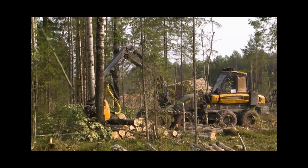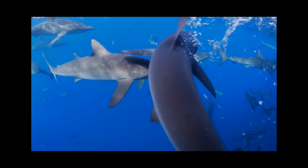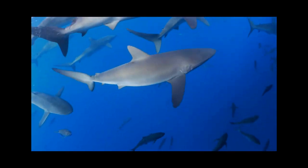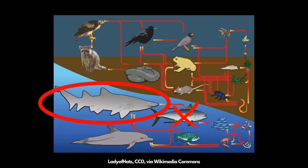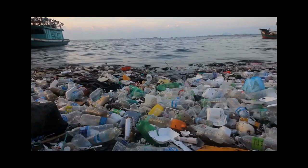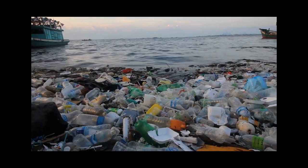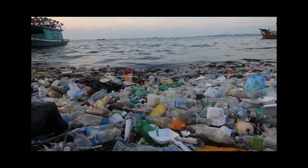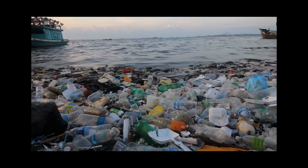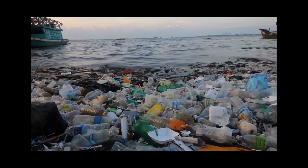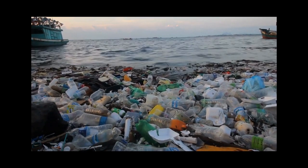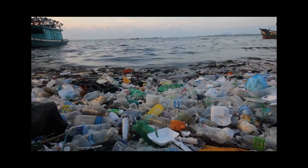Countless other changes, such as rising temperatures, habitat destruction, or increased predators or diseases, can create a ripple effect throughout an ecosystem. Remember, changes to an ecosystem's physical or biological components can have profound effects, potentially leading to the decline or even extinction of certain species.